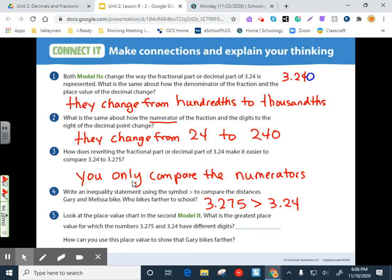And look at the place value chart in the second model. What's the greatest place value for which the number three and two hundred seventy five thousandths and three and twenty four hundredths have different digits? That was the hundredths. Place value was the one that really gave us the comparison part to use. We didn't even need to look at the thousandths. How can you use this place value to show that Gary bikes farther? It's simple. Seven hundredths is greater than four hundredths.